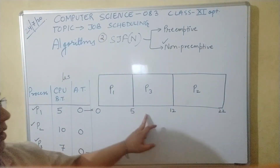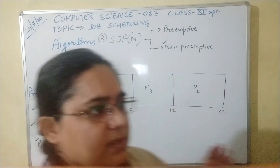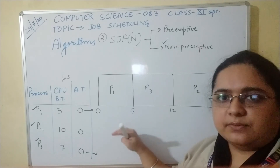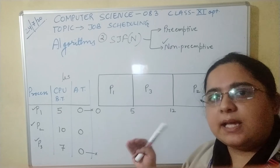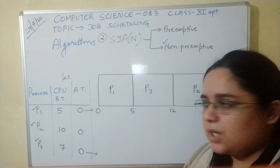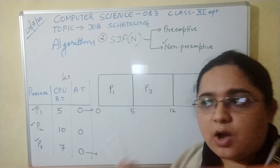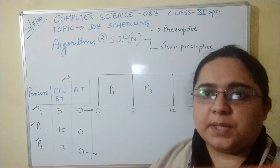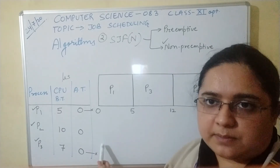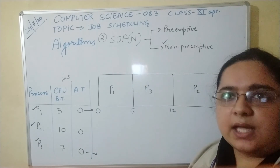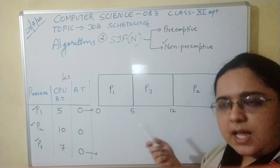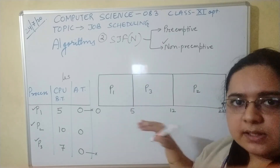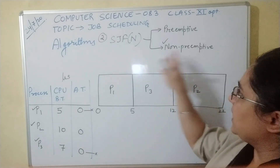In FCFS, when a large process starts executing first, all the shorter processes at the end of the queue don't get a chance to execute for a long time. The efficiency of an operating system is measured by the number of processes it executes per unit time, so the goal is to execute more processes in less time. That is why SJF executes short jobs first and then the larger tasks. This completes our introduction to FCFS and the non-preemptive version of SJF. In the next class we will take up the preemptive version of SJF and Round Robin scheduling.